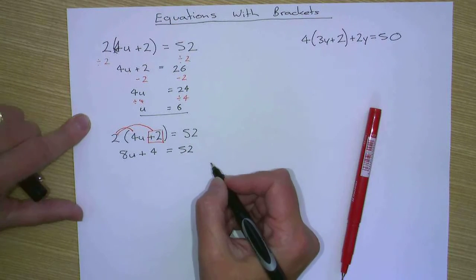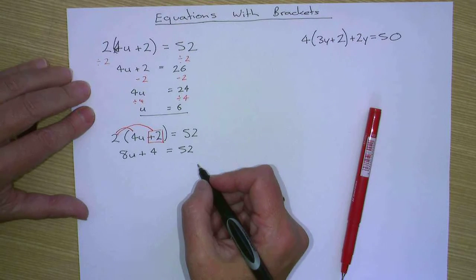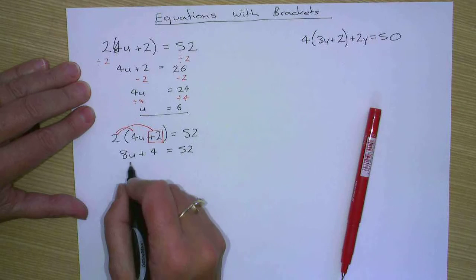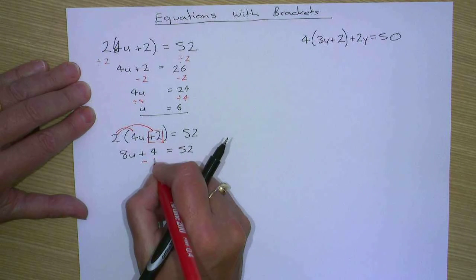So once we've got it in this form, it's easy then to use our normal methods to solve. So eight u plus four, so we need to minus four from both sides.